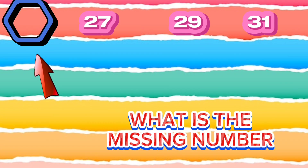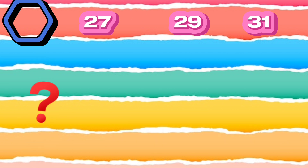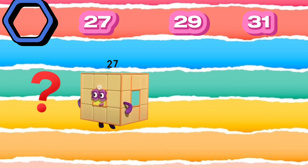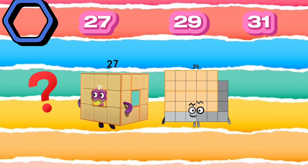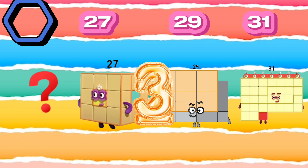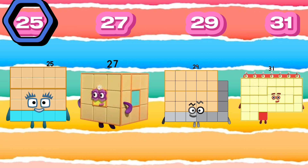What is the missing number? 27, 29, 31. The missing number is 25. The number sequence is 25, 27, 29, 31.